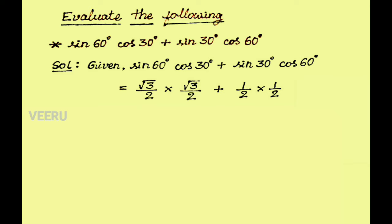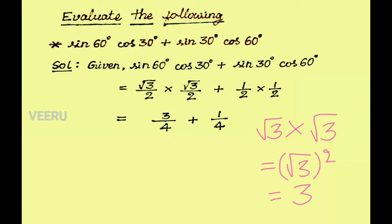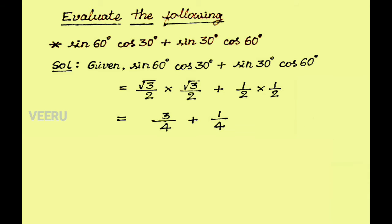Now we have to simplify this. In the first term, in the numerator root 3 into root 3 is 3, and in the denominator 2 into 2 is 4, plus 1 into 1 is 1, in the denominator 2 into 2 is 4. The denominators are the same, so we can add these two easily. In the next step we get 3 plus 1 whole divided by 4, which is 4 by 4, which equals 1.